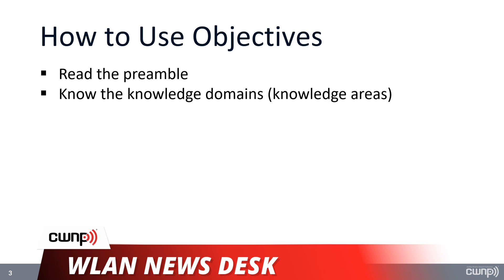Then you want to make sure you know the knowledge domains — the general areas covered by the exam. They're usually anywhere from three to as many as 10 or 11 knowledge domains, and you want to really make sure you know them well. Know the percentage of each knowledge domain that is covered on the exam. Then you're going to use the objectives kind of like a checklist. As you're studying, have a printed copy of the objectives or a PDF version, and use a PDF editor that allows you to highlight or indicate that you feel really comfortable with an objective.